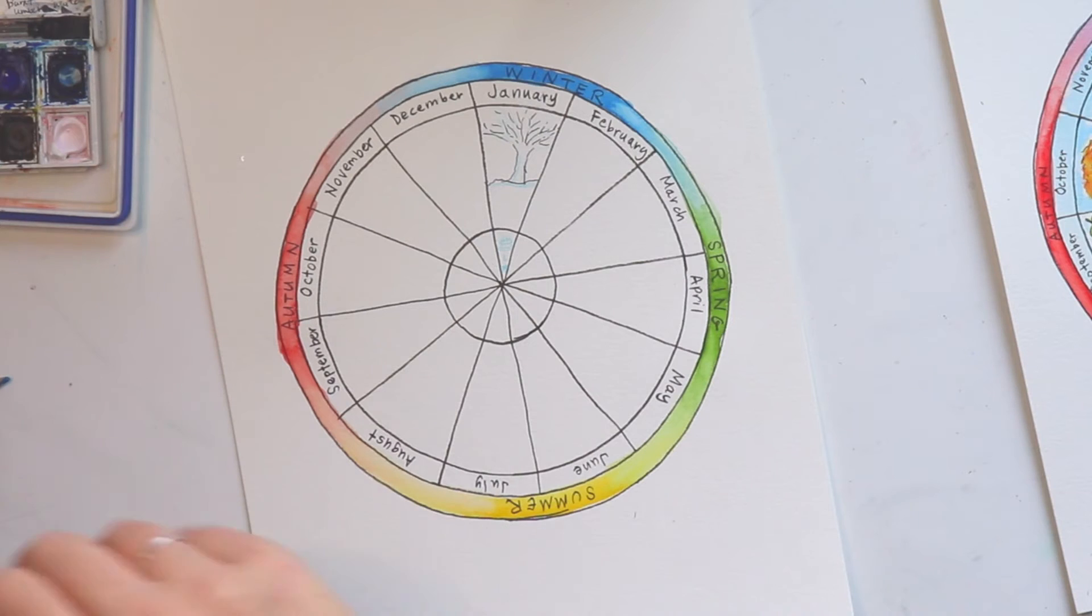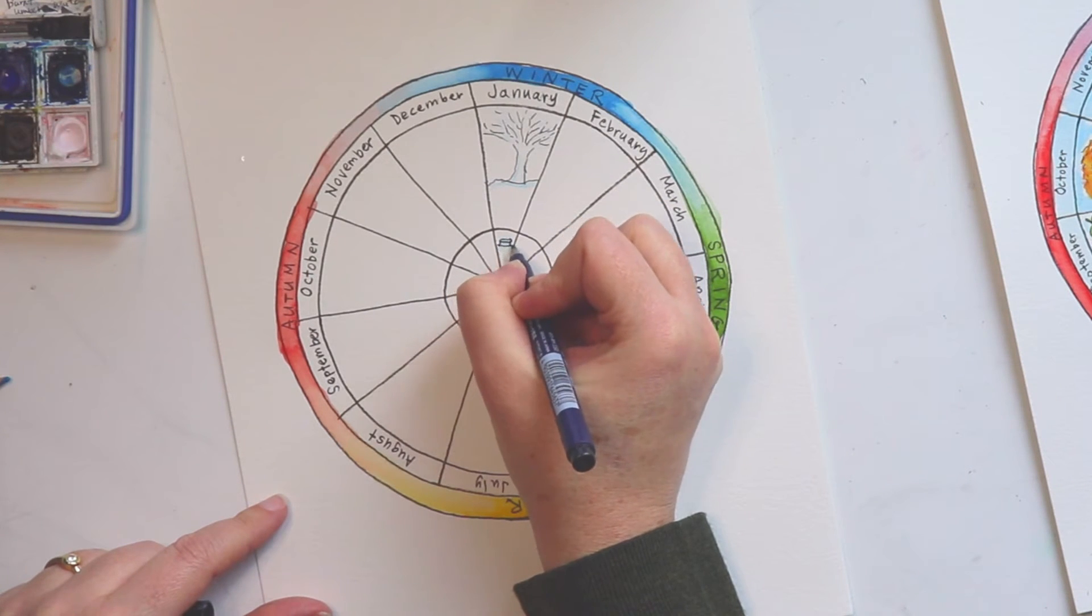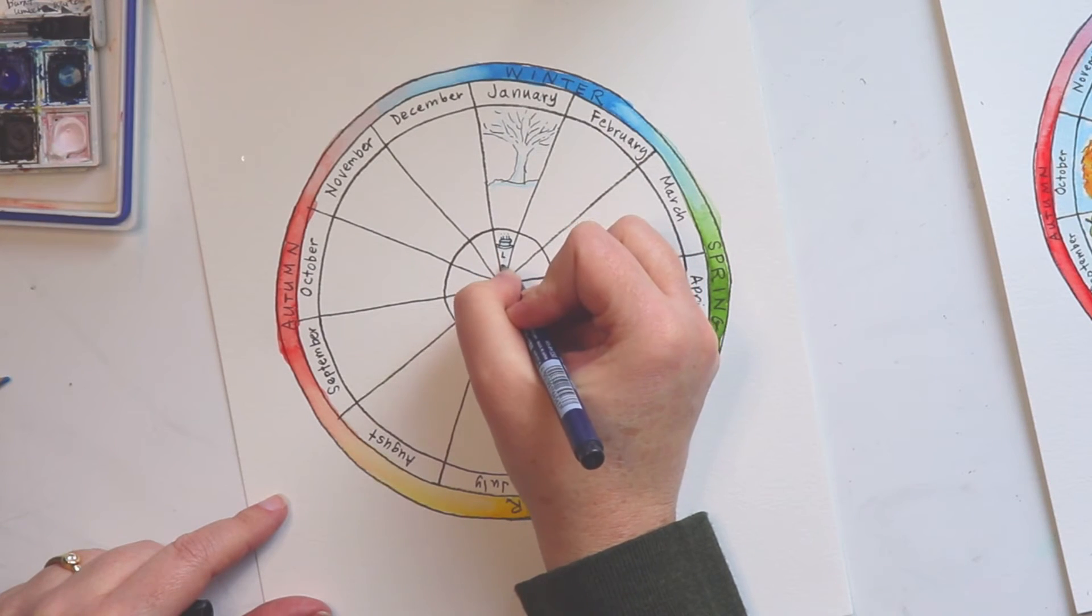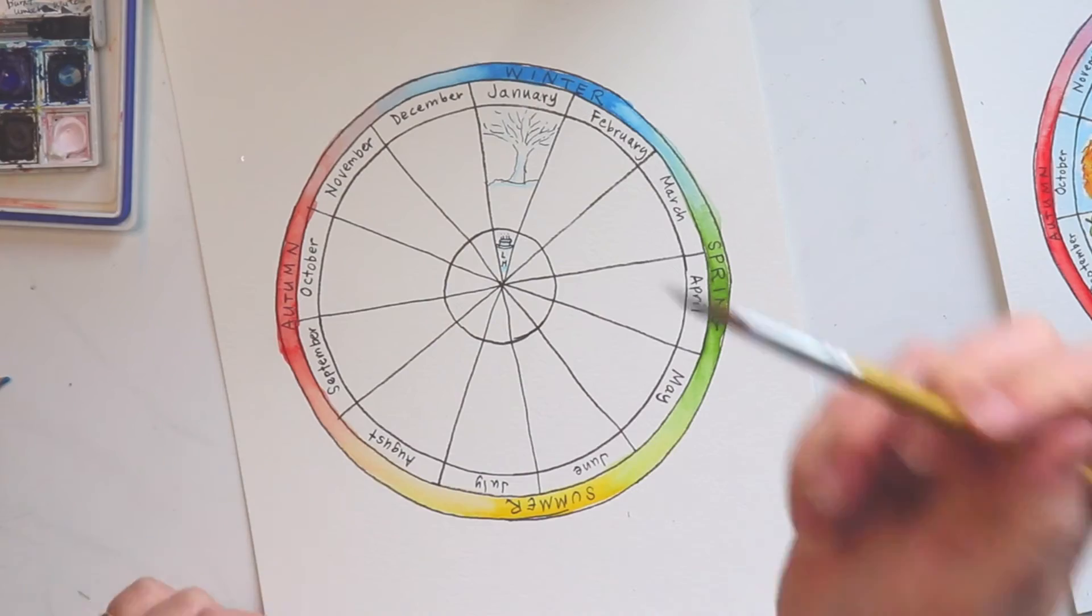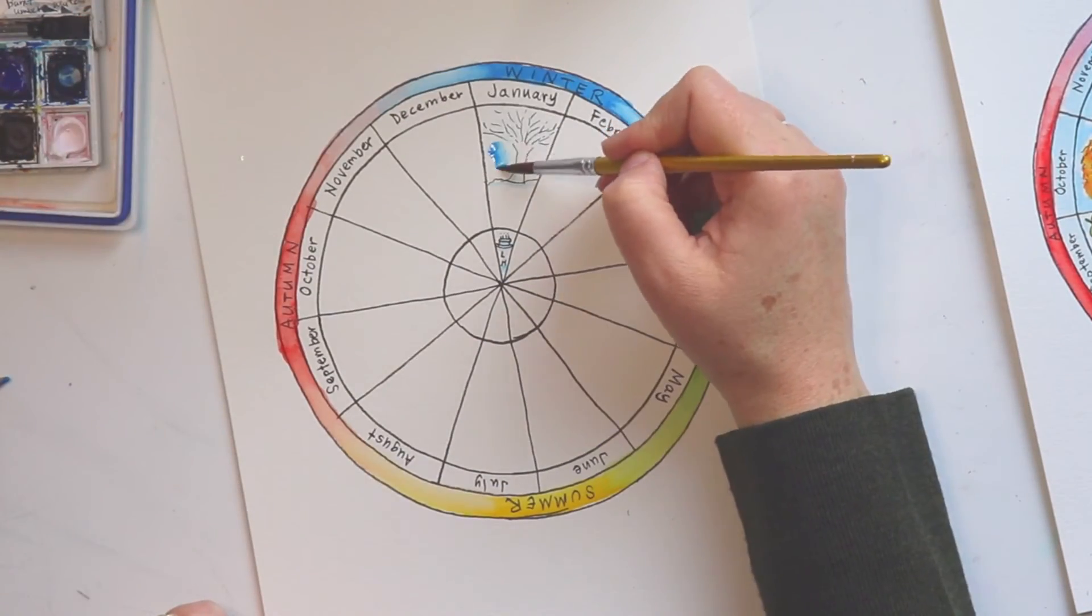And then I'm just going to add, oh, I forgot to do this. Let me outline the birthday cake, the candles and the L and the M.